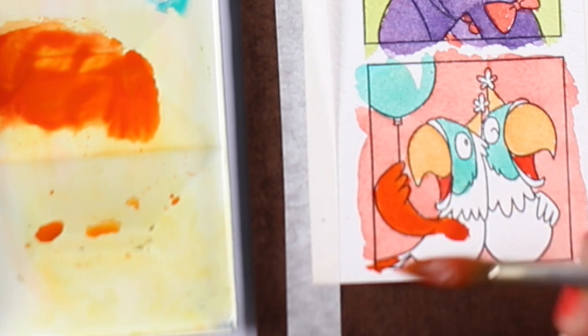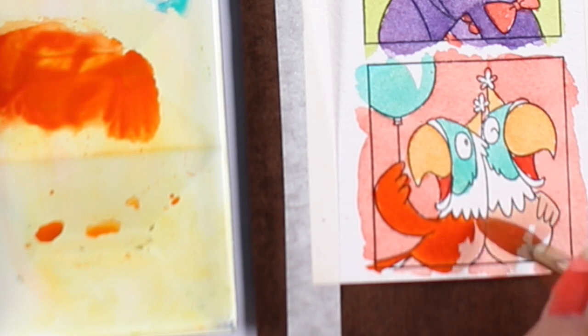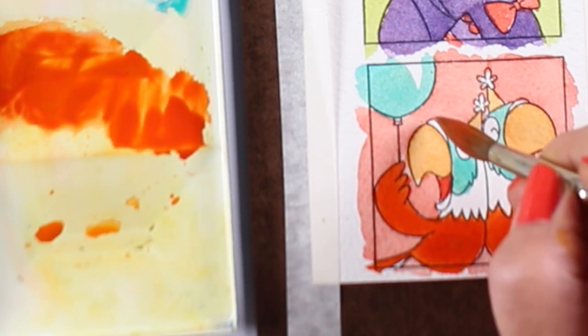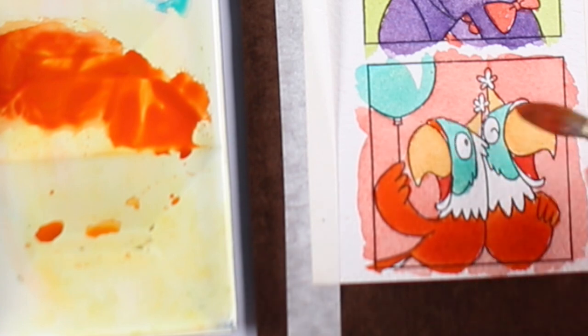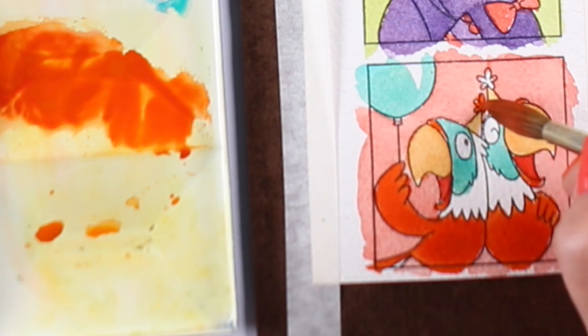I was then left with what to do with the rest of their heads, and I put a little bit of the orange in the areas surrounding the beak and the bottom of the beak and dropped a little bit more of that color in the hat.